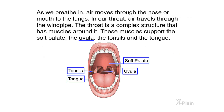As we breathe in, air moves through the nose or mouth to the lungs. In our throat, air travels through the windpipe. The throat is a complex structure that has muscles around it. These muscles support the soft palate, the uvula, the tonsils, and the tongue.